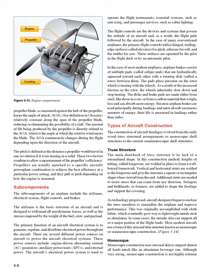The flight controls are the devices and systems that govern the attitude of an aircraft and, as a result, the flight path followed by the aircraft. In the case of many conventional airplanes, the primary flight controls utilize hinged, trailing-edge surfaces called elevators for pitch, ailerons for roll, and the rudder for yaw. These surfaces are operated by the pilot in the flight deck or by an automatic pilot. In most modern airplanes, airplane brakes consist of multiple pads, called caliper pads, that are hydraulically squeezed toward each other with a rotating disc, called a rotor, between them. The pads place pressure on the rotor which is turning with the wheels. As a result of the increased friction on the rotor, the wheels inherently slow down and stop turning.